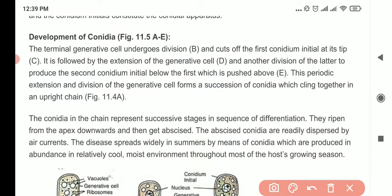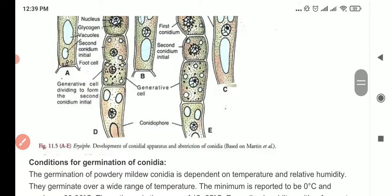It will cut off the first conidium initial at its tip, followed by extension of the generative cell and another division of the latter, producing the second conidium initial below, which is pushed above. So let's learn from the diagram.